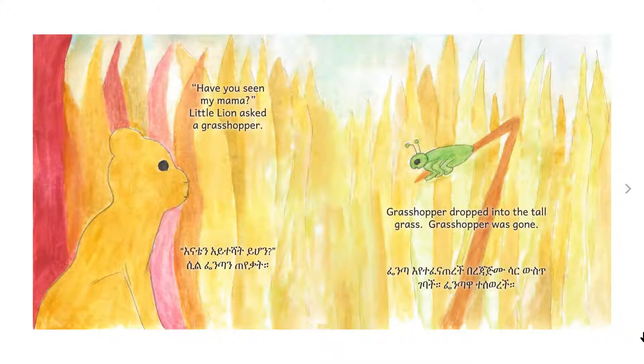Have you seen my mama? Little Lion asked a grasshopper. Grasshopper dropped into the tall grass. Grasshopper was gone.